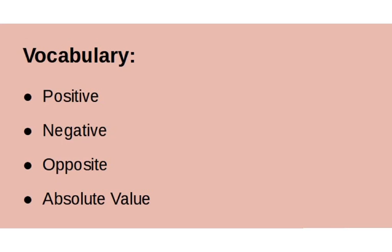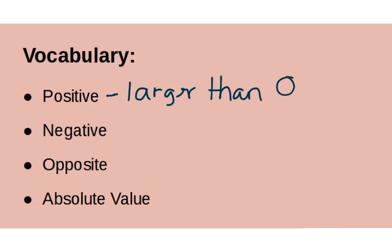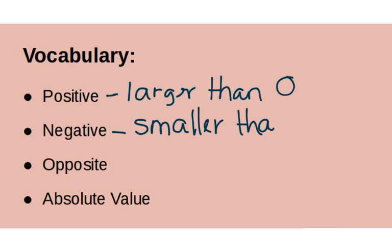Very quickly, I want to do a little bit of vocabulary as a reminder. All of this should be review, but it's been a long summer, so I want to make sure you remember. The first thing is positive: a positive number is larger than zero, and if you're looking at a number line, it's on the right side of zero. A negative number is smaller than zero and is on the left side of zero on the number line.